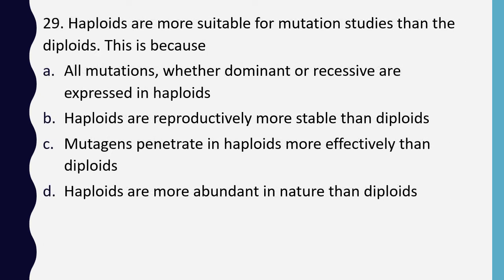Question 29. Haploids are more suitable for mutation studies than diploids. This is because: all mutations whether dominant or recessive are expressed in haploids; haploids are reproductively more stable than diploids; mutagens penetrate haploids more effectively than diploids; or haploids are more abundant in nature than diploids. Correct answer is option A: all mutations whether dominant or recessive are expressed in haploids.